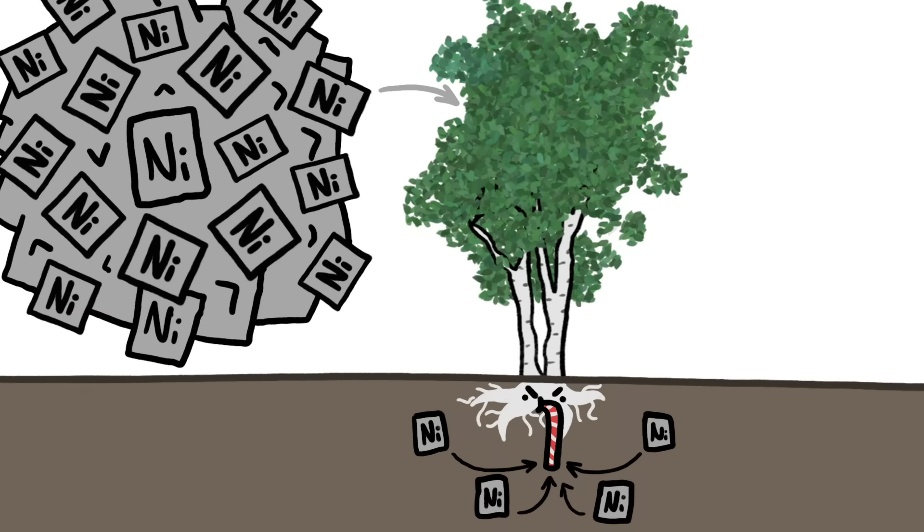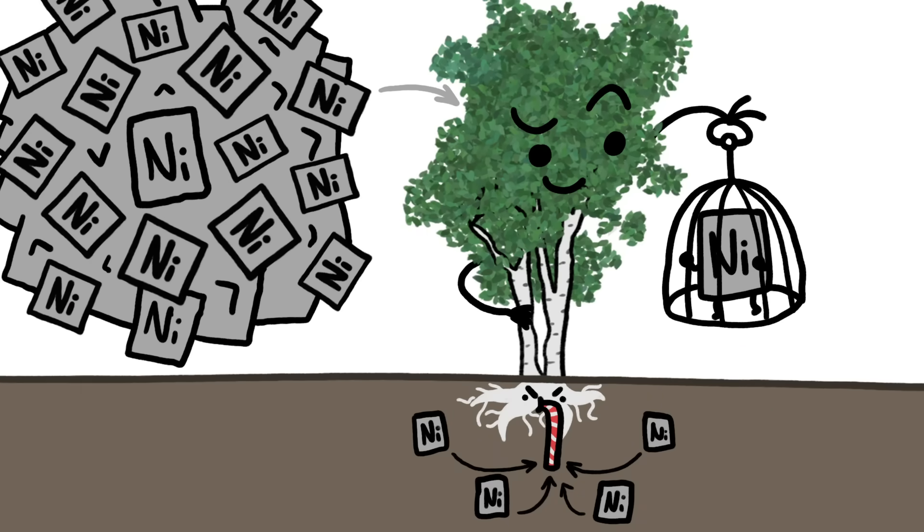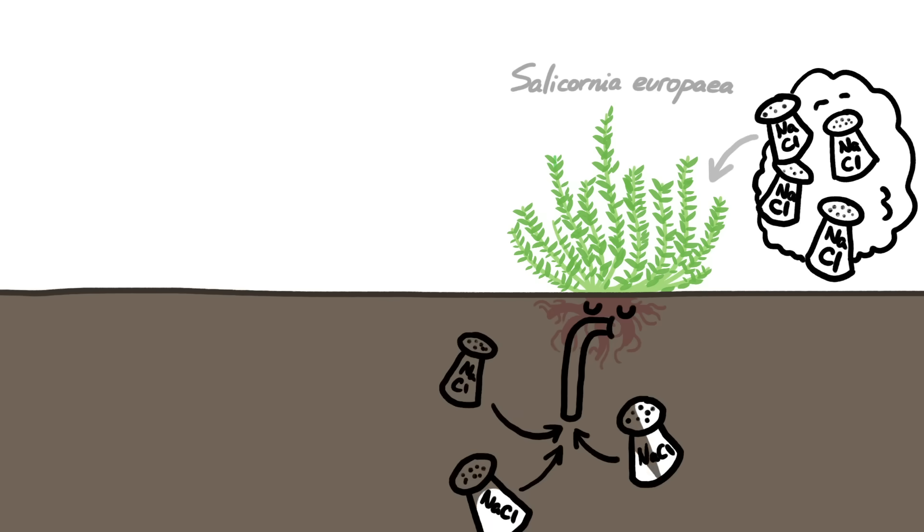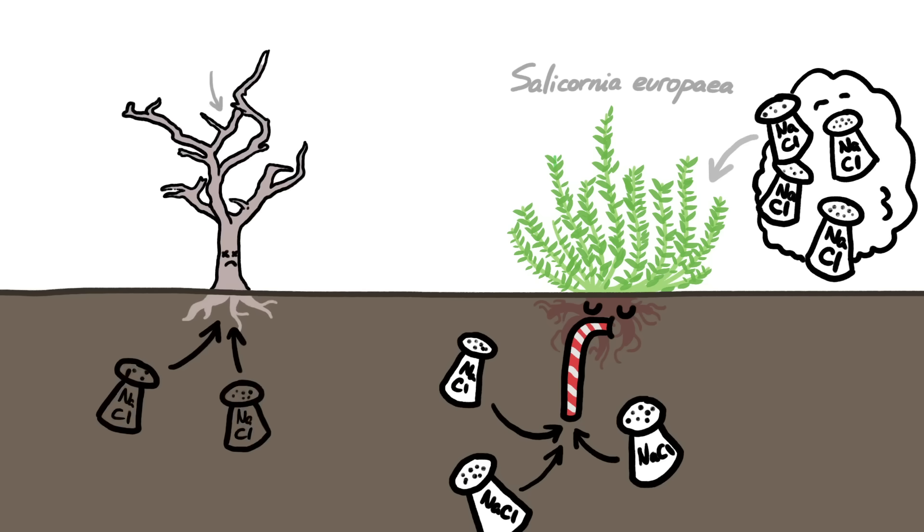OK, but why the heck do they slurp up so much nickel if they're just going to pack it away? Maybe other hoarders can give us a clue, like the salt-loving plants that use this same mechanism to hoard salt, another nutrient that generally kills plants at high concentrations.